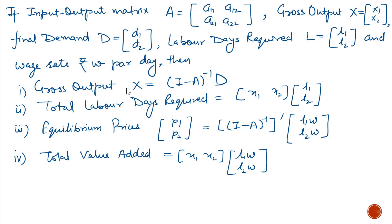First point: gross output X equals (I minus A) inverse multiplied by D. Second, total labor days required equals output transpose multiplied by L1, L2.